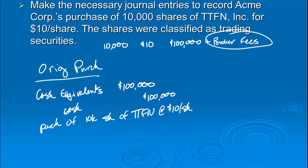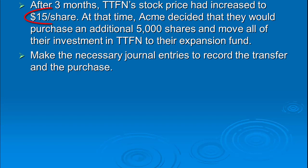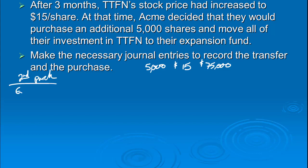After three months, TTFN's stock price has increased to $15 a share. They've decided they don't want to keep it in trading securities — they just want to ride this out and move it into their expansion fund. Not only do they want to transfer the 10,000 shares they've already got, but since it's doing so well, they're going to buy 5,000 more shares. So we want to make journal entries to record both the purchase and the transfer, starting with the purchase. That's 5,000 shares at $15 a share, meaning Acme is going to spend $75,000 on this second purchase, putting it straight into the expansion fund.